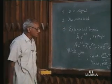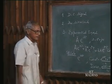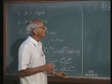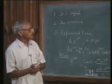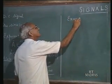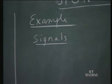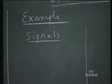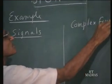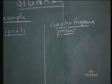A characteristic of all these functions — DC signal, sinusoid, exponential — is that their derivatives exist up to an infinite order. They are all smooth functions. Before we proceed further, let me take examples of signals and identify what complex frequency terms are present in them.